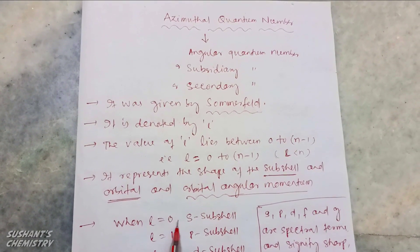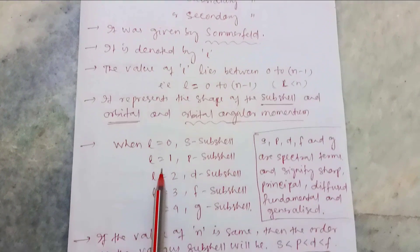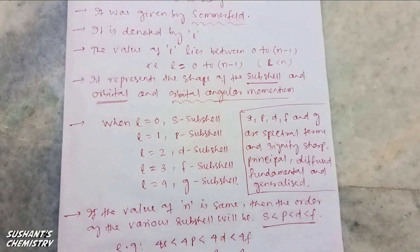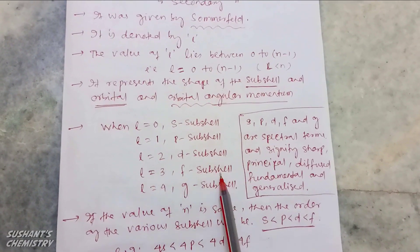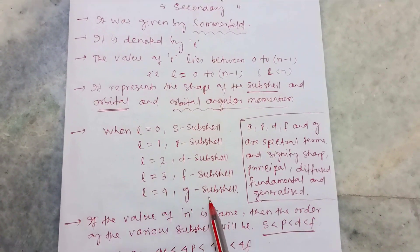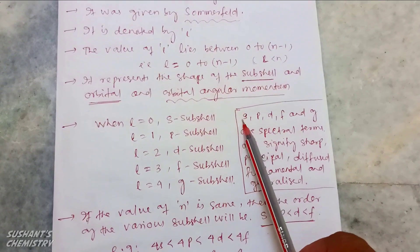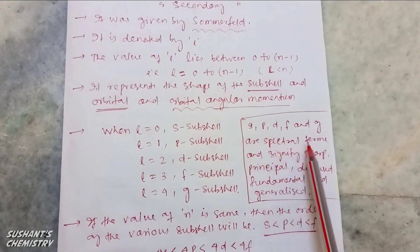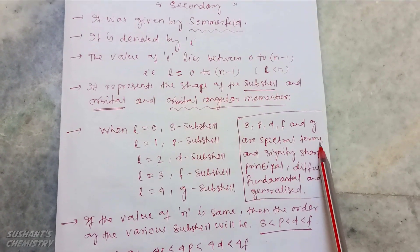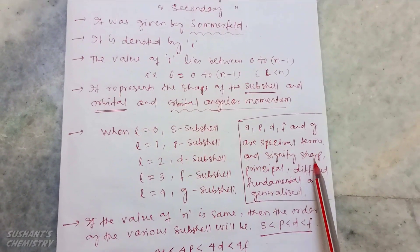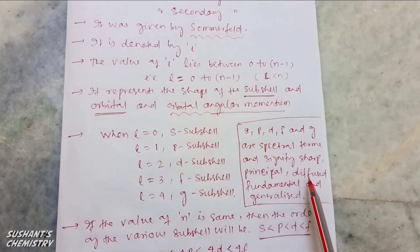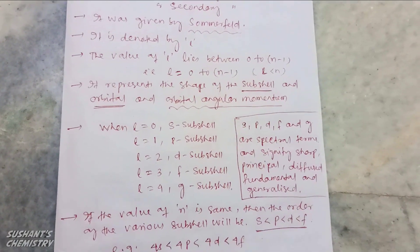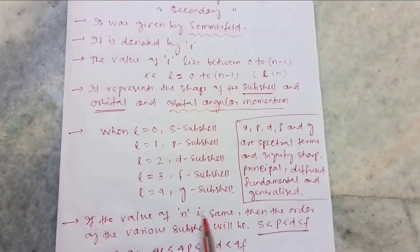The azimuthal quantum number represents the shape of the sub-cell and orbital angular momentum. Where l equals 0, that is the s sub-cell; l equals 1, p sub-cell; l equals 2, d sub-cell; l equals 3, f sub-cell; l equals 4, g sub-cell. Here s, p, d, f, and g are called spectral terms in the spectral notation and signify sharp, principal, diffused, fundamental, and generalized.